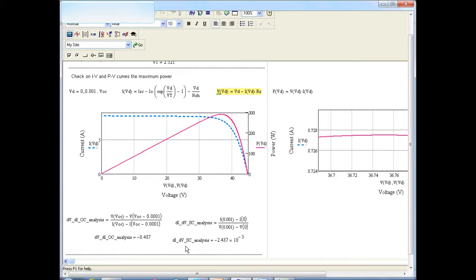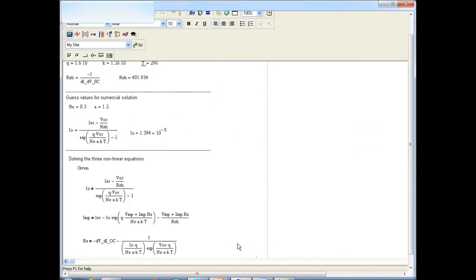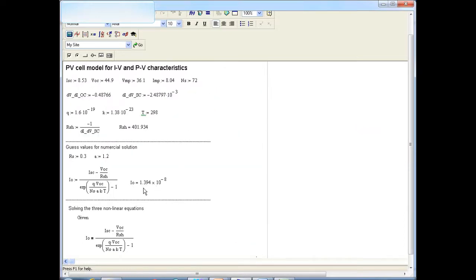Similarly, the dI over dV at short circuit condition came out to be this value, which is also close to what we estimated. This is minus 2.4 times 10 to the minus 3. And the value obtained from the data sheet is shown here. So it's also almost the same.